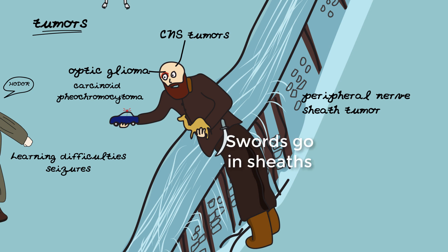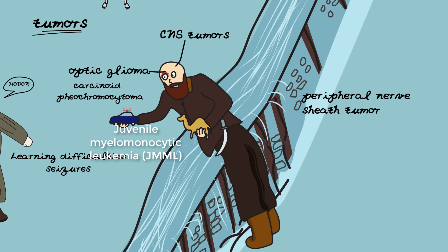He's also holding two things in his hands. One is a police car, which refers to pheochromocytoma — even though it's a car and carcinoid would make more sense. His left hand refers to juvenile myelomonocytic leukemia, which shortened is JMML, pronounced 'Jummel.' And Jummel in Arabic means camel — that's why he's holding a camel.